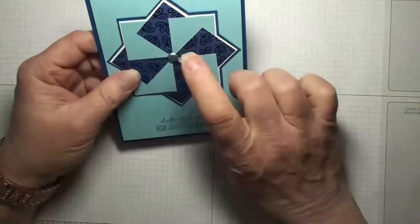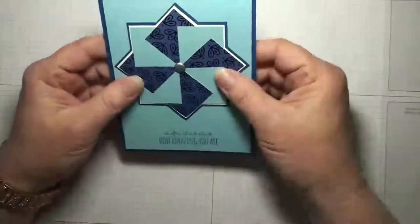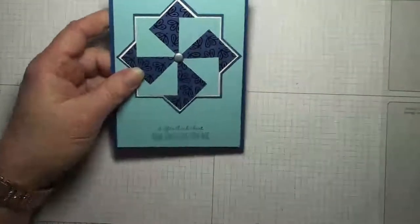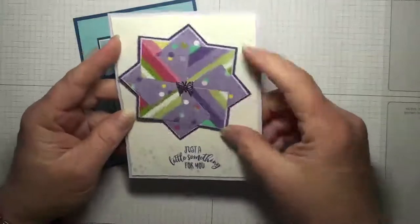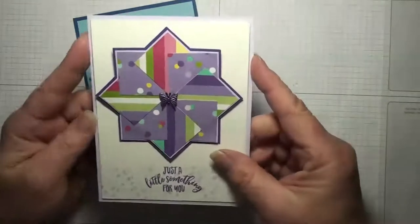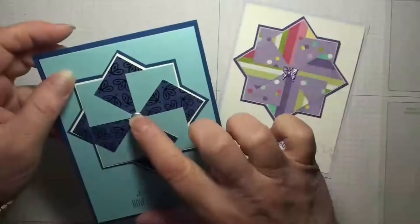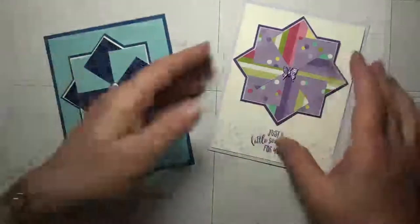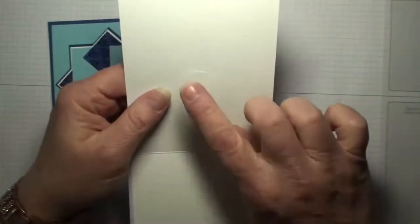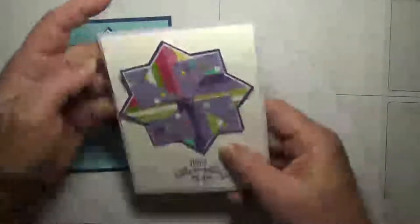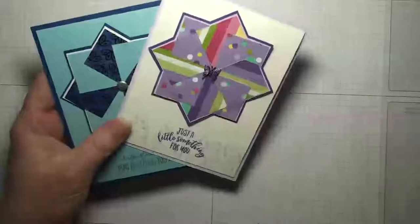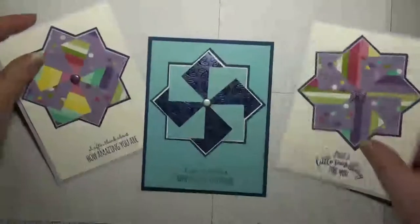You could also pop this and put dimensionals behind your pinwheel. And another thing you could do is you can make it so that the pinwheel turns. And all you have to do with that is instead of putting the brad on just the pinwheel, you put the brad through both the pinwheel to the back of the card base. And then I just covered it up on this one with a whisper white circle. So here's several different renditions.